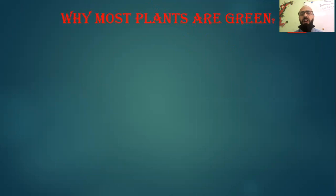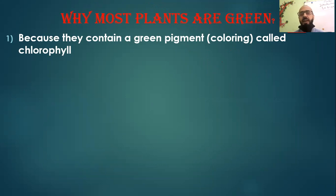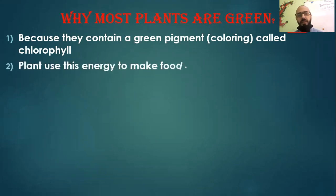Why are most plants green? Most plants are green because they contain a substance called a green pigment. We can call it chlorophyll — because they contain a green pigment or green color called chlorophyll. This chlorophyll helps plants to carry out the photosynthesis process.